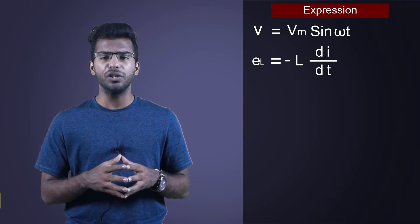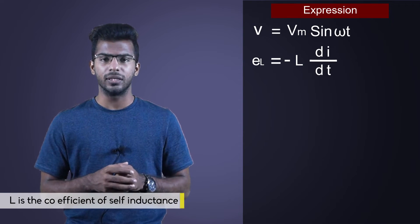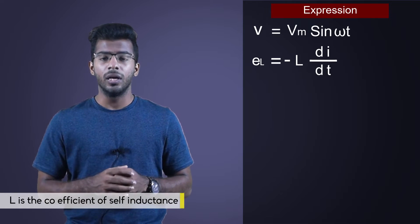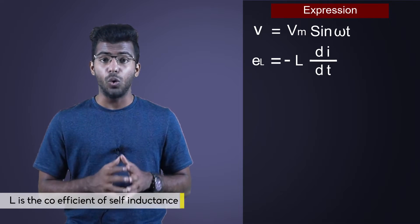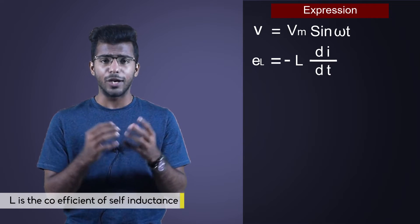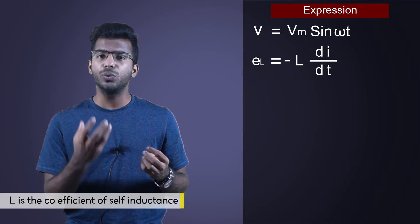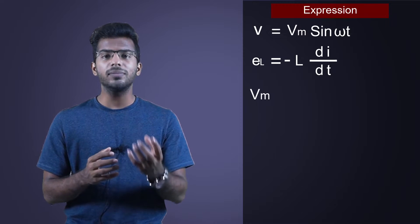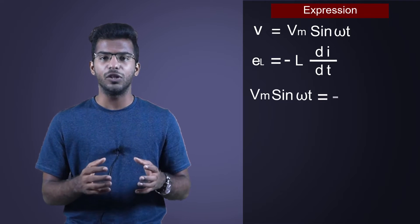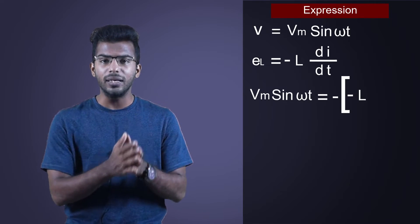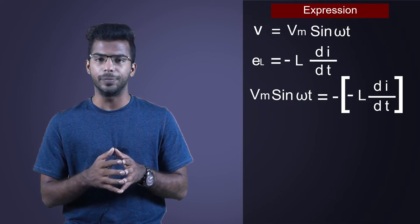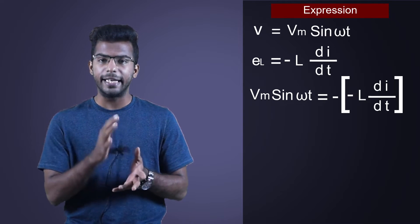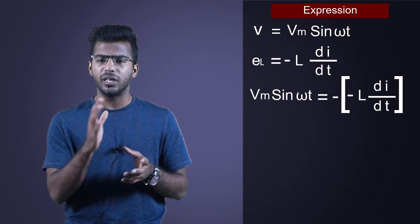L is the coefficient of self-inductance given in Henry. In this circuit, the supply voltage is equal and opposite to the self-induced EMF at every instant. So Vm sin omega t is equal to minus of minus L into di by dt. Negative sign indicates that they are opposite in nature.